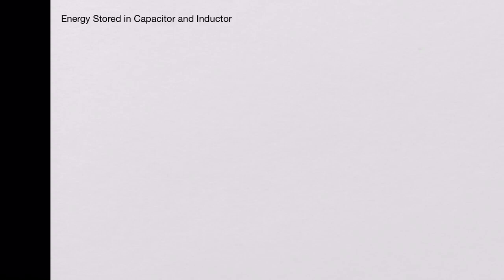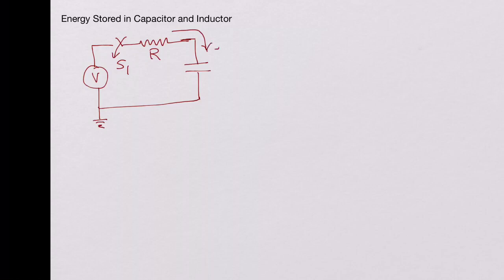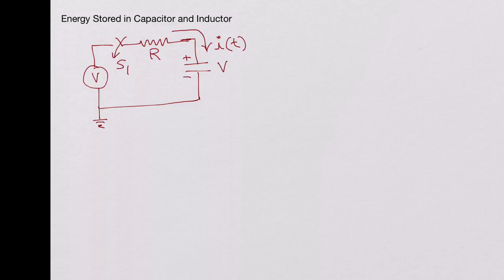Welcome to e know-how. In this video we will look at energy stored in a capacitor and energy stored in an inductor. Let's take an RC circuit initially, so we'll have an R and a C, a switch S1, and we will close it across a voltage source V. We know that there is a current that flows into this circuit as a function of time, and it will charge the capacitor to the full voltage V of the power supply.